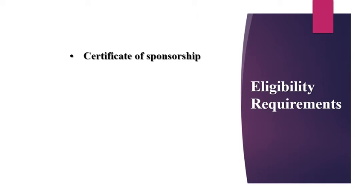The first requirement for this visa category is a Certificate of Sponsorship. This is assigned by the Home Office and your employer in your name in the form of a letter. It is basically an electronic record containing your personal details. Your employer will issue it in the form of a letter with a reference number, which you need to submit to the relevant embassy along with your passport for your entry clearance or leave to remain application.